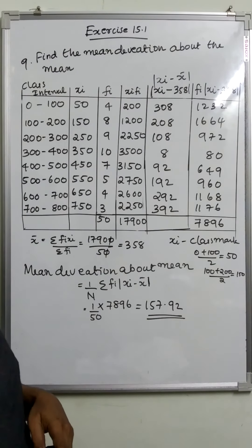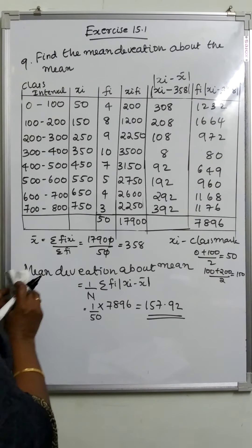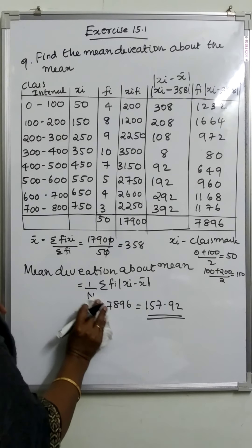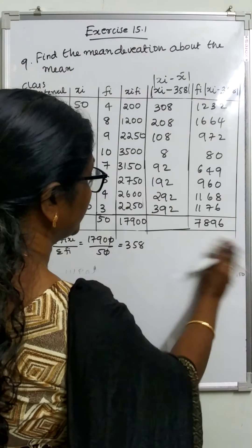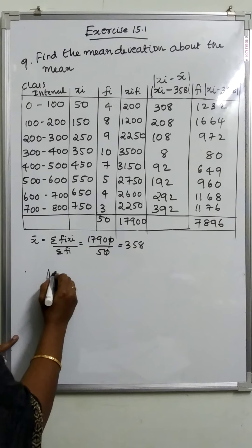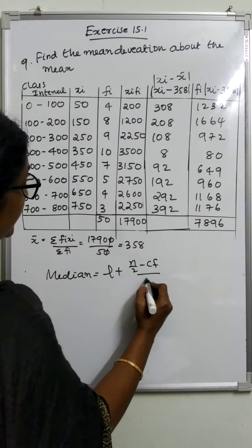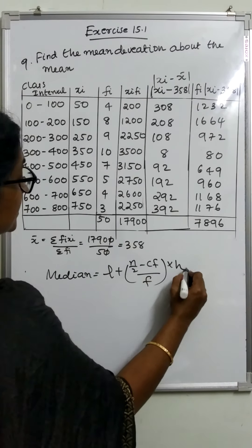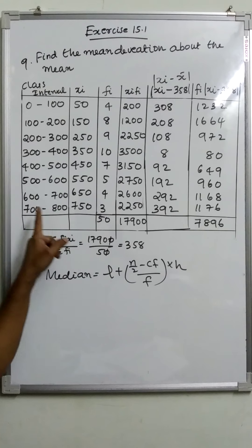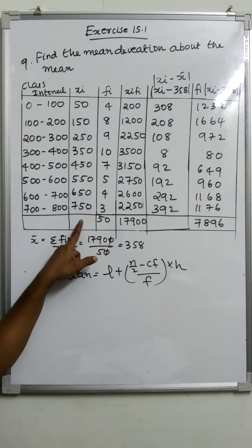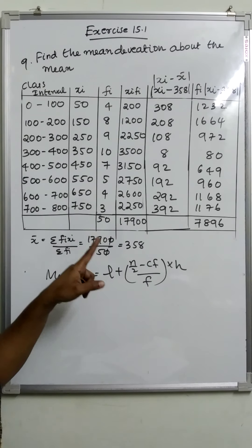We also have the mean deviation about the median. First you have to find the median. The median formula is l plus n by 2 minus cf by f into h. We have the same columns, class intervals, and frequencies. Next is the cumulative frequency.